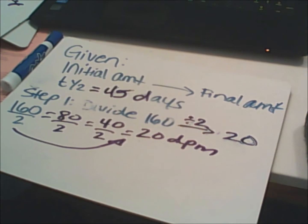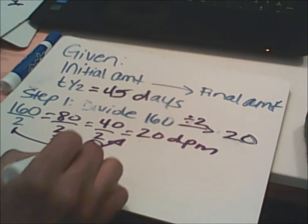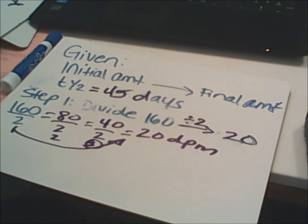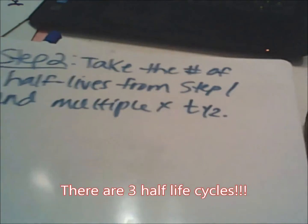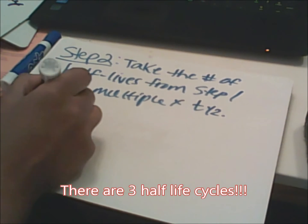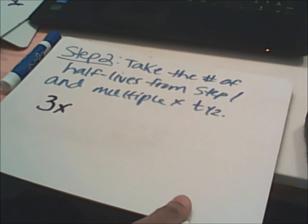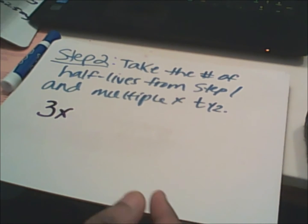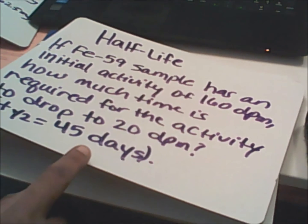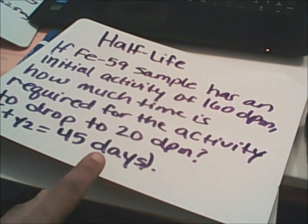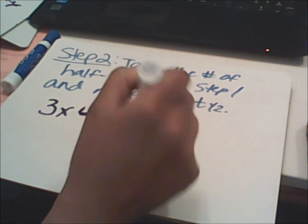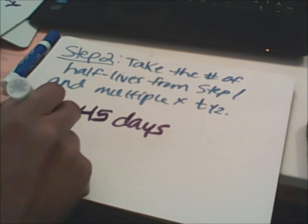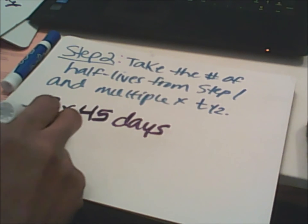Stop right there and count the number of half-lives: one, two, and three. It took three half-lives to get there. So the next step is to multiply that three — the number of half-lives counted — times the half-life factor of 45 days. Three times 45 days gives us 135 days.